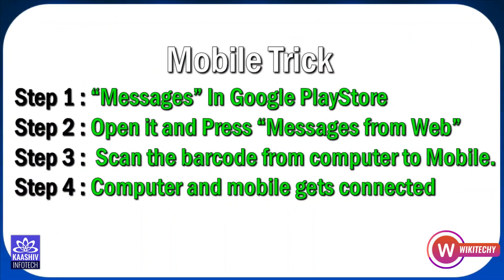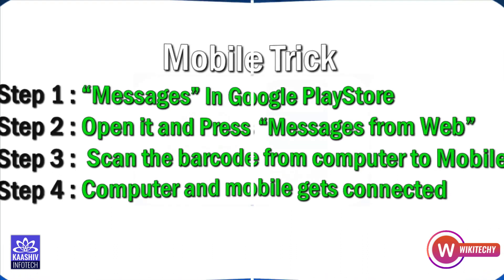We've got a number. Go to your mobile phone. You can use the phone number. Install the app, open it, enable messages from web, go to computer, click the link, and scan the barcode. The computer will connect automatically. You can access SMS.